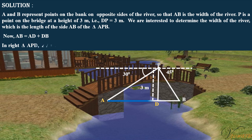In right-angled triangle APD, angle A is equal to 30 degrees.